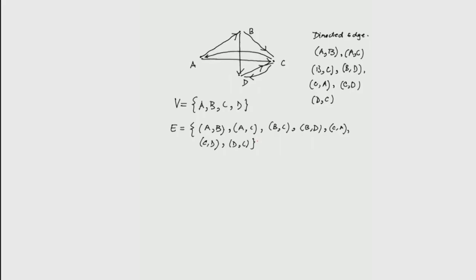We combine these two sets to write the directed graph as the pair (V, E). What we note here is that this is naturally a relation. Recall that if V = {A, B, C, D}, a relation on V is a subset of V cross V, and the set E is exactly a subset of V cross V — therefore it is a relation on V.